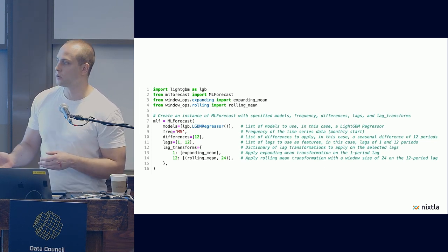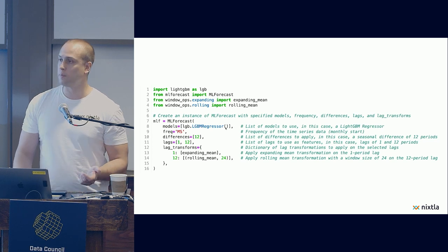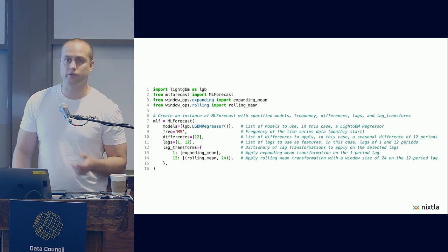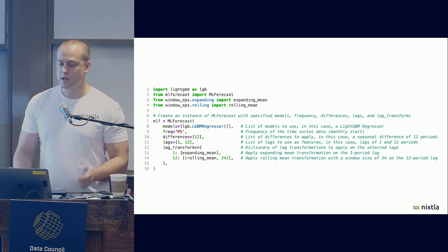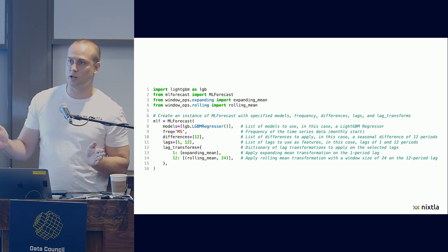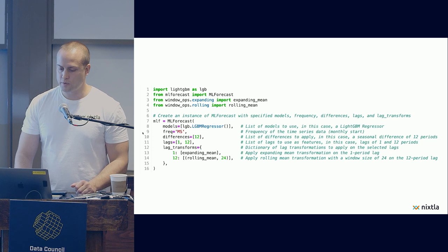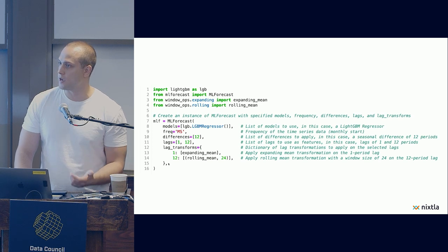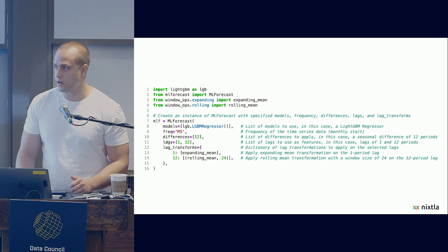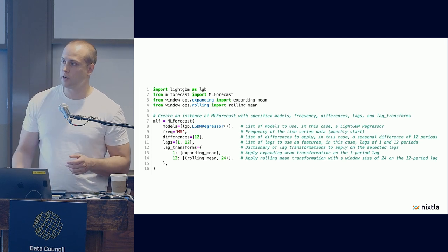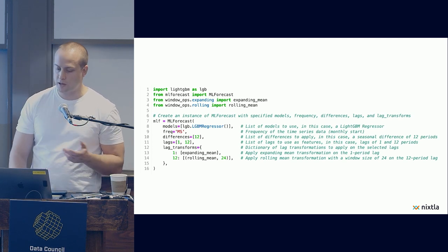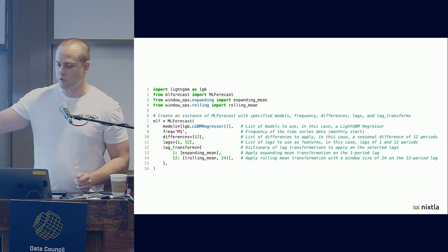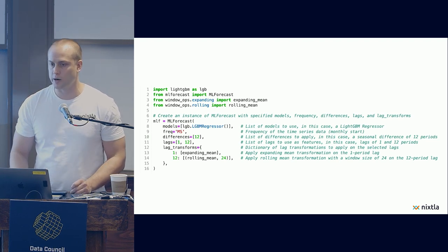So the only thing that you need to do besides importing the libraries is to instantiate this ML Forecast class. You just pass a list of models. Here we are using light GBM, but you can really put whatever model of the SKLearn family, linear regression, nearest neighbors. You could also use XGBoost, and we will take care of distributing that computation natively for you. After that, you just specify the frequency that you're going to be using. And here you can really see the power of the ML Forecast library in terms of feature generation. Machine learning models require some feature engineering. Normally you have to do that outside of the pipeline. Here you can simply define the lags and the different window operations that you want to implement, like expanding mean or rolling mean for every two years in this case, which is 24 months.